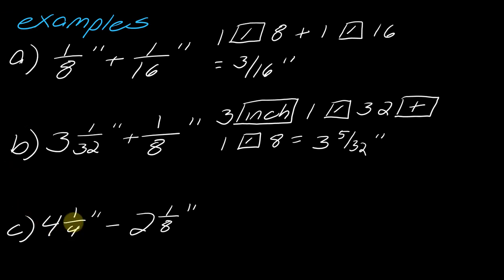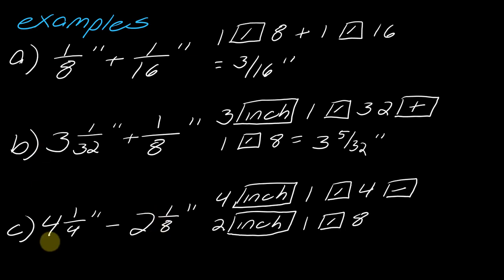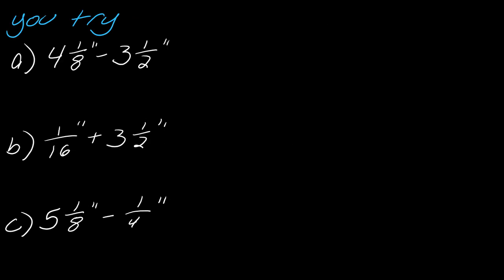So this will ultimately equal three and five thirty-seconds inches. And then for the last one, just for extra funsies, I decided to do two mixed numbers. So since this is a whole number, I have to put in four inches into the calculator and then one over four minus two, declare that it's whole inches and then one over eight. And if I punch all of that in, I will get two and one eighth inch.